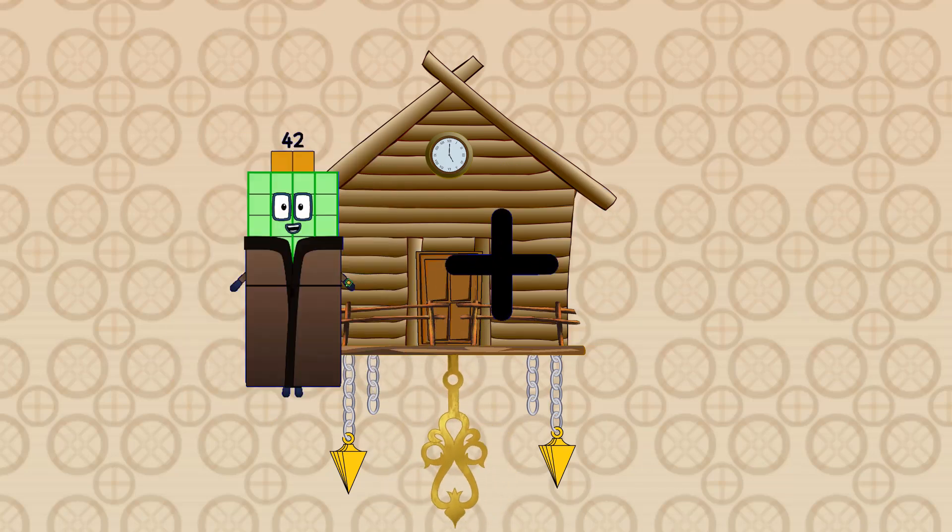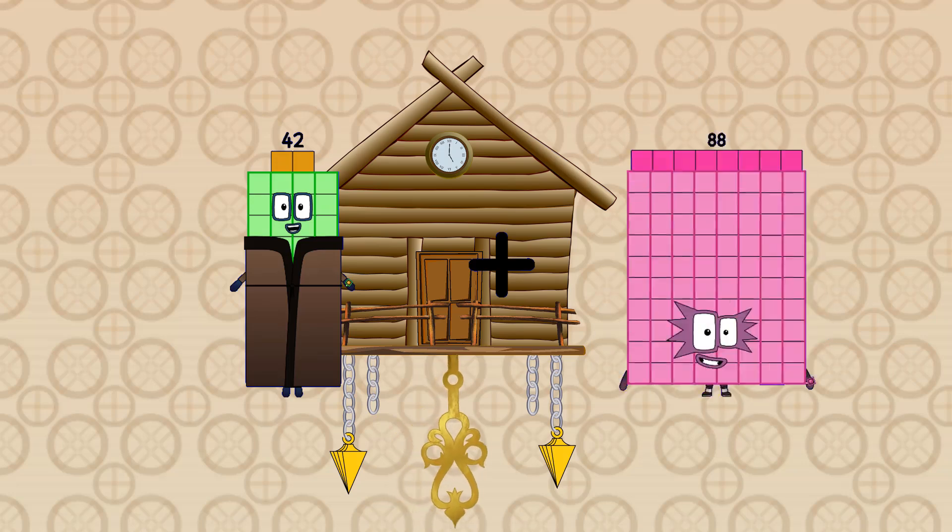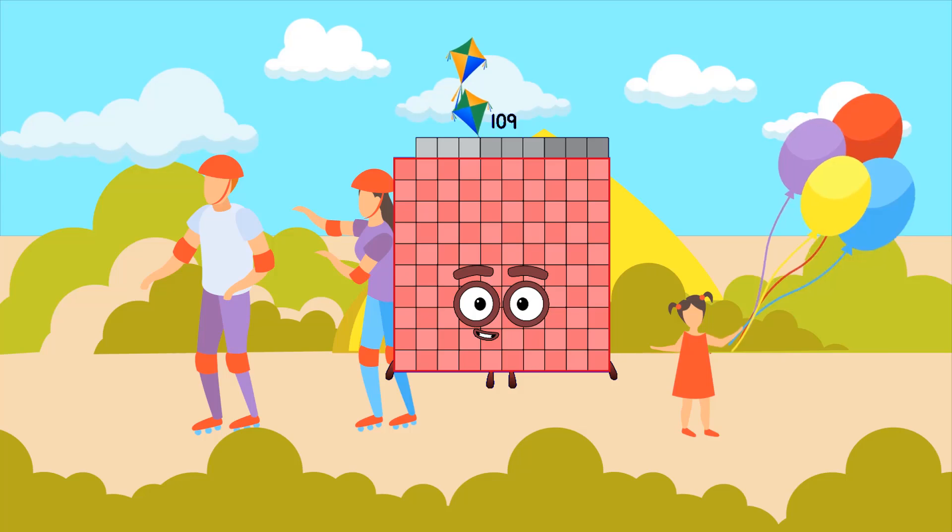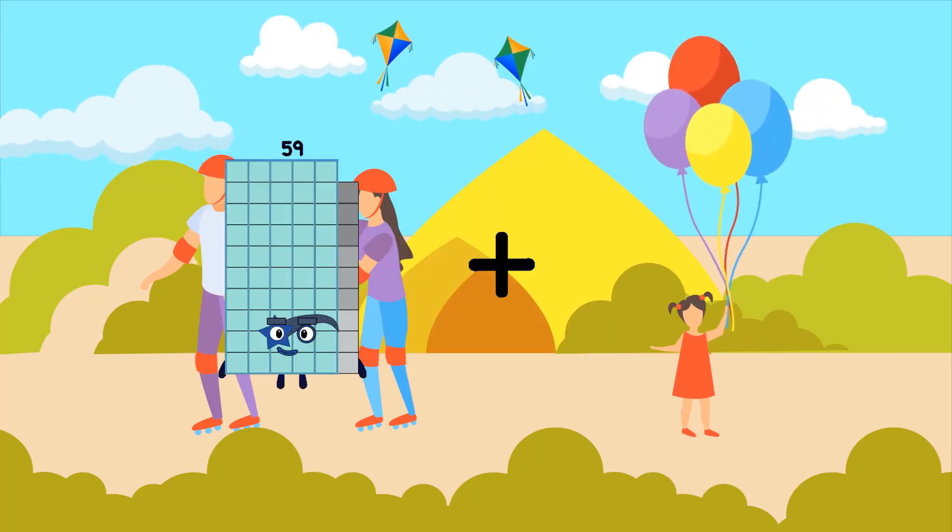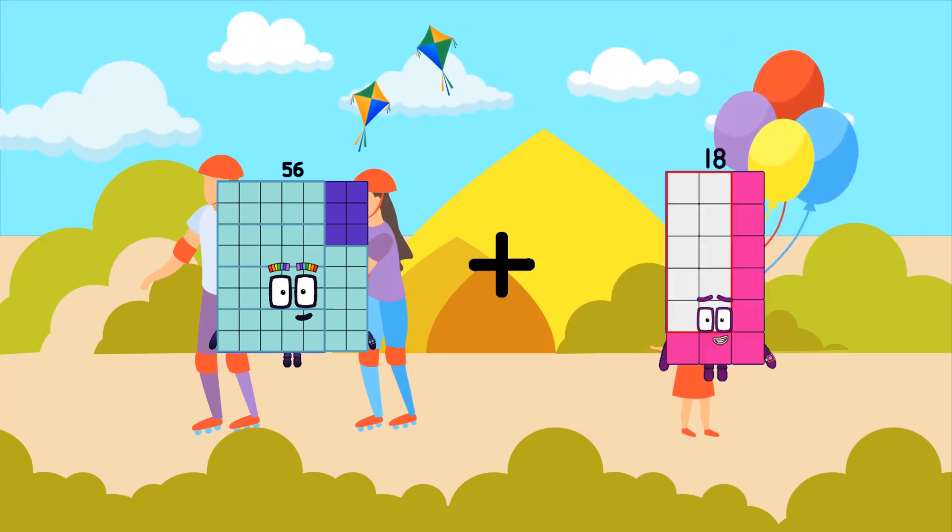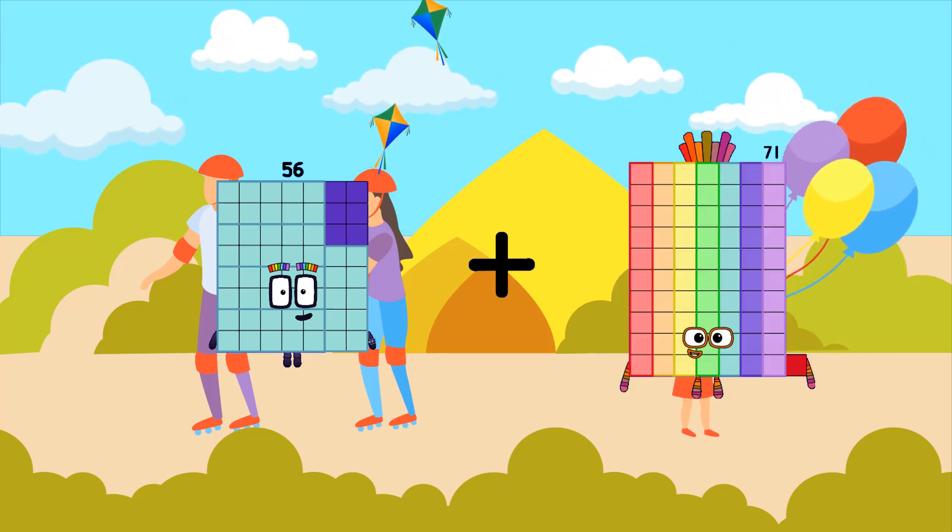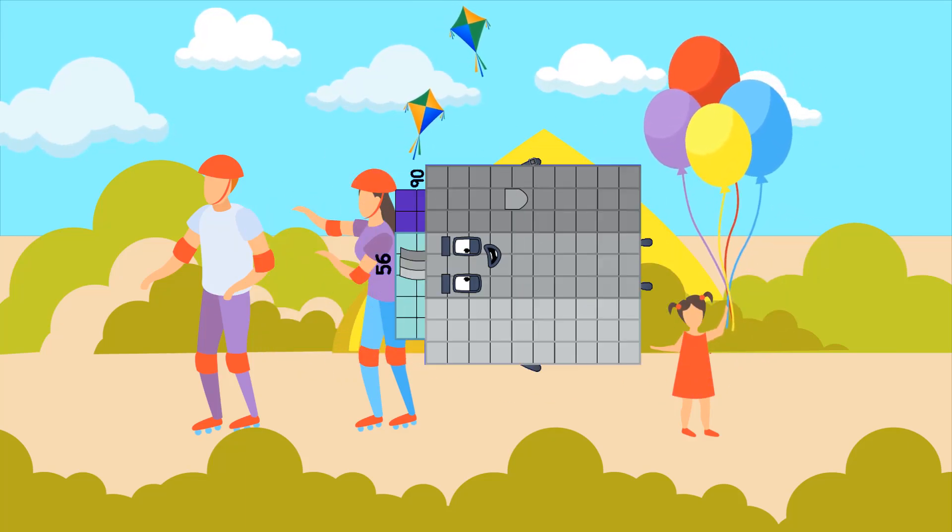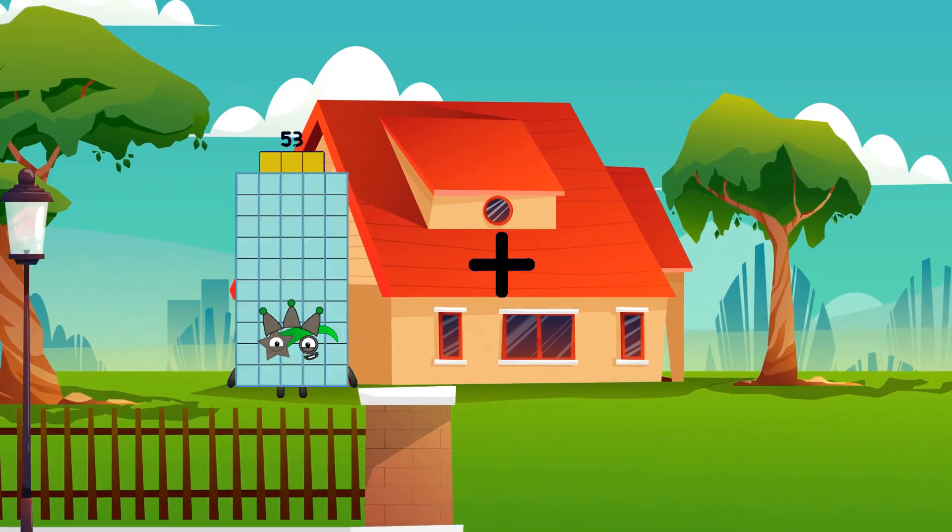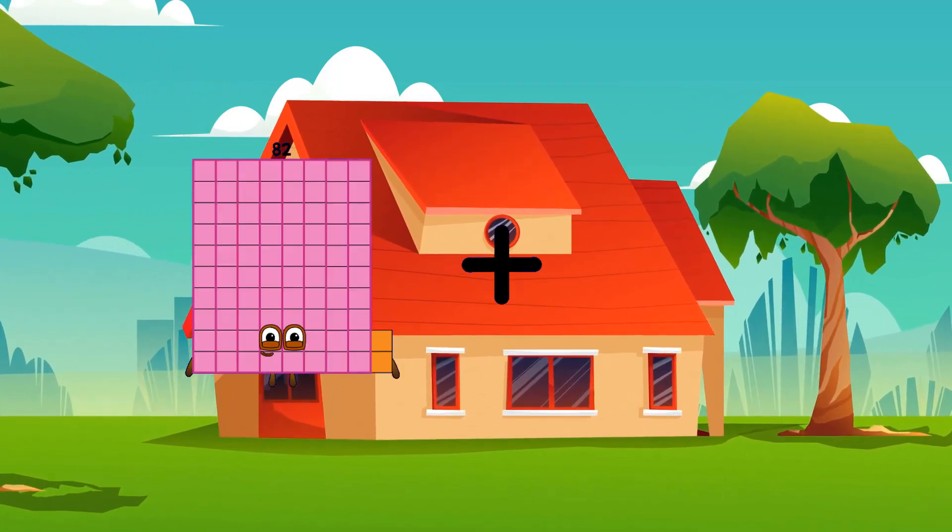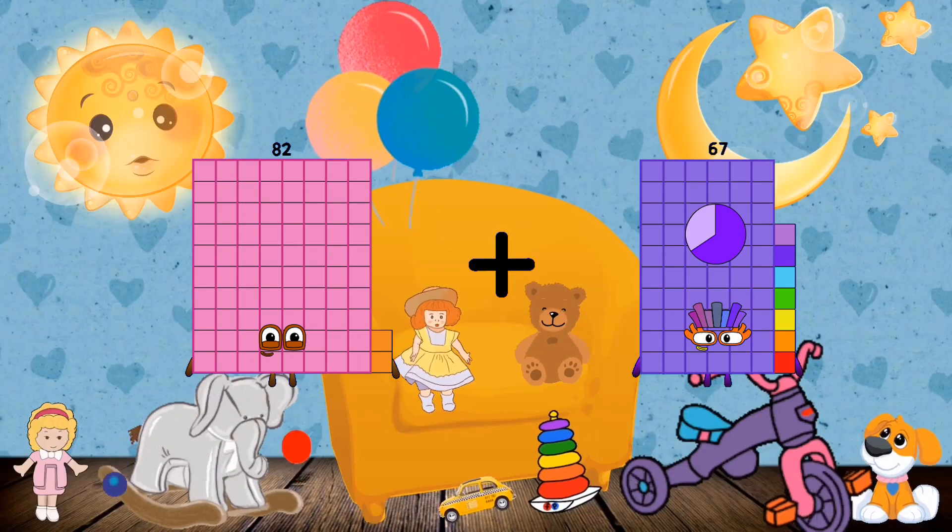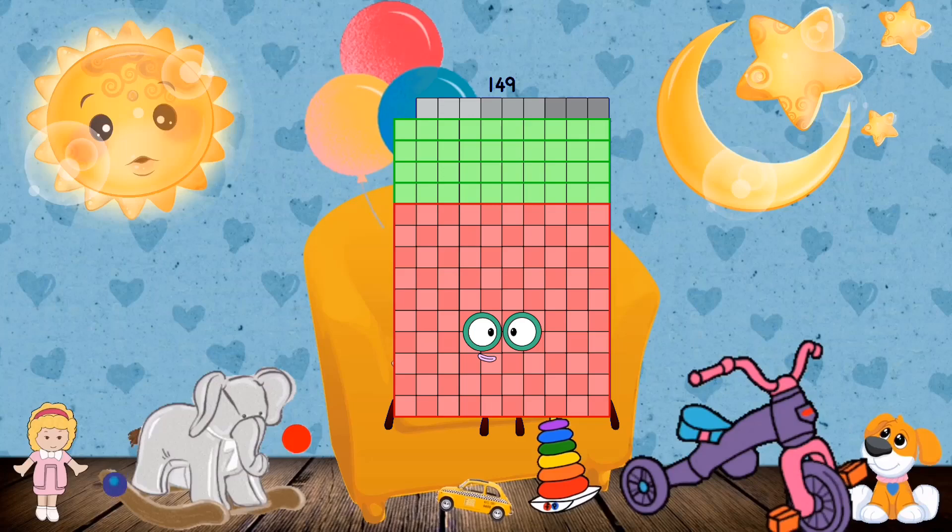42 plus 67 equals 109. 56 plus 90 equals 146. 82 plus 67 equals 149.